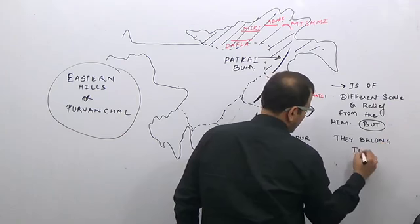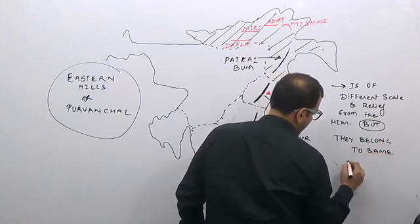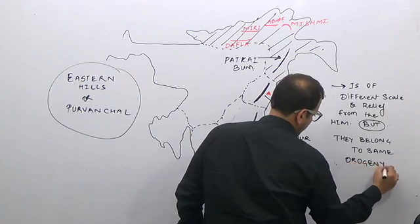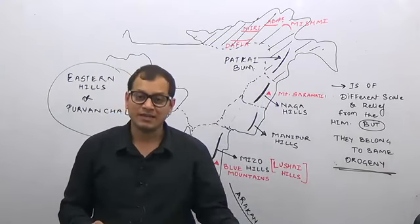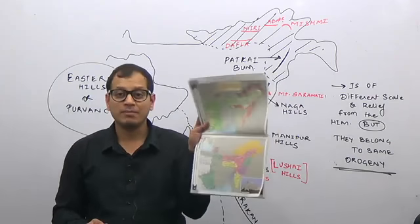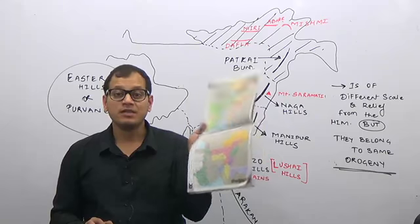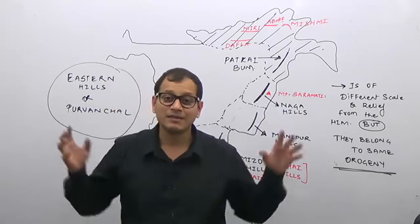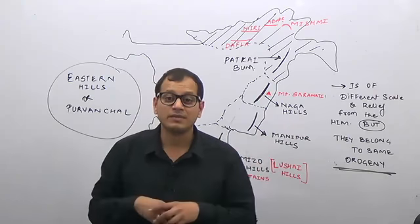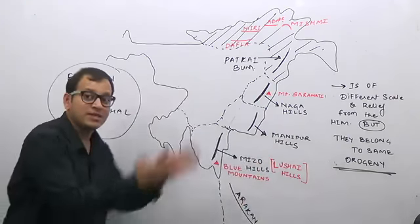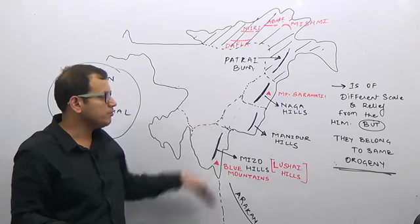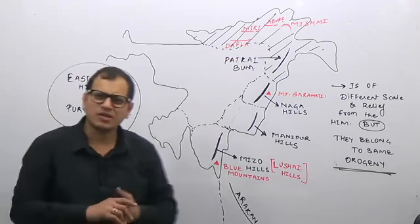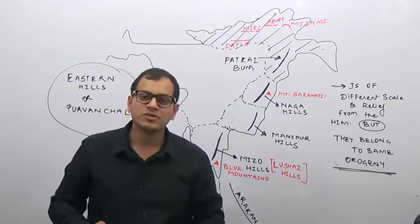They belong to the same orogen. Open your atlas and go through this map — complete your map properly with the lecture series. At the end of the Himalayas topic, I will take the entire map-based question in a single lecture. Remember north to south, east to west. A shortcut to remember: Patkai Bum, Naga, Manipur, Mizo — B N M M.